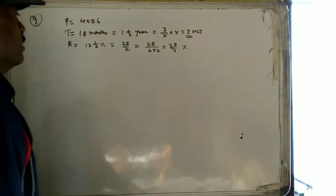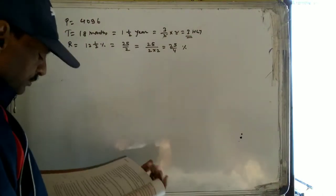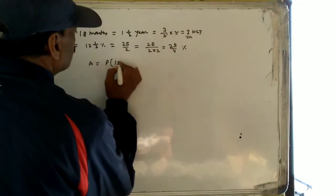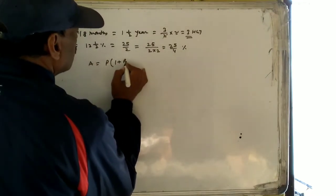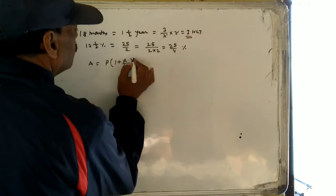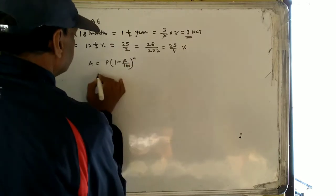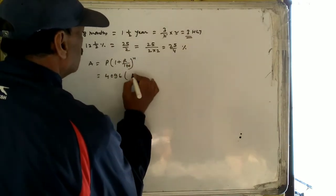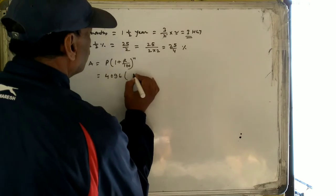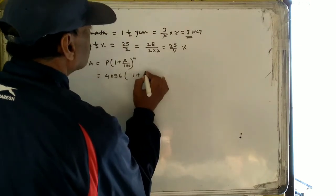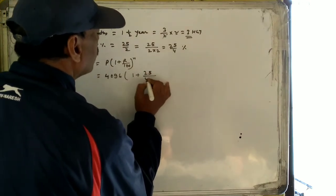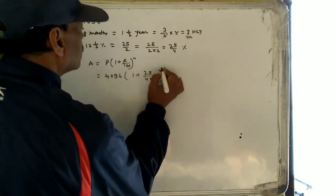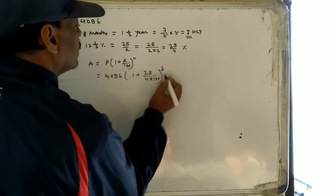Now we put the values into the compound interest formula: A equals P into (1 plus R by 100) to the power N. The principal is 4096, the rate is 25 by 4 (which is 12.5%), divided by 100, and the time or number of periods is 3.